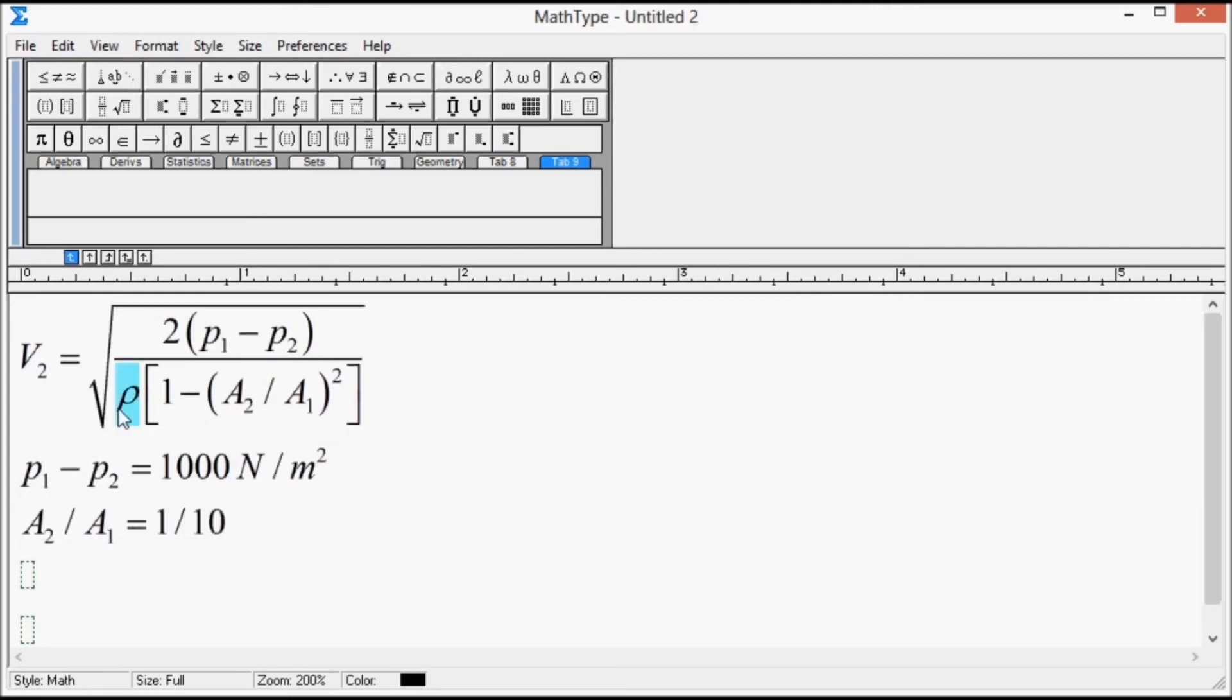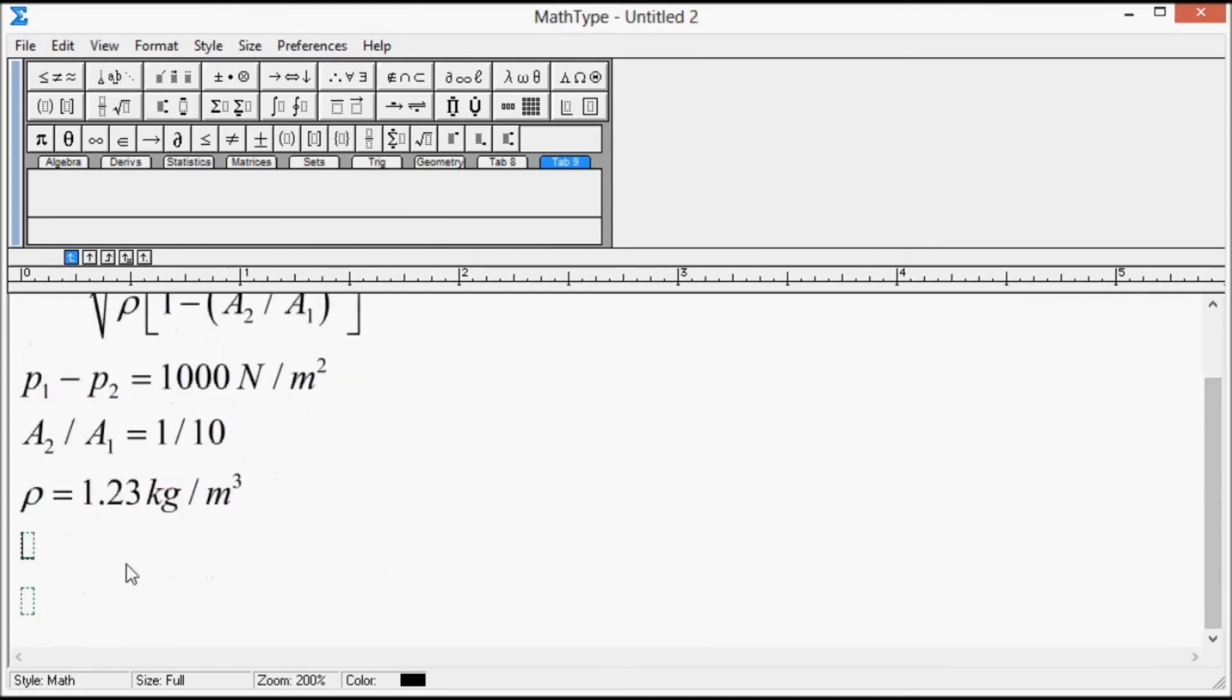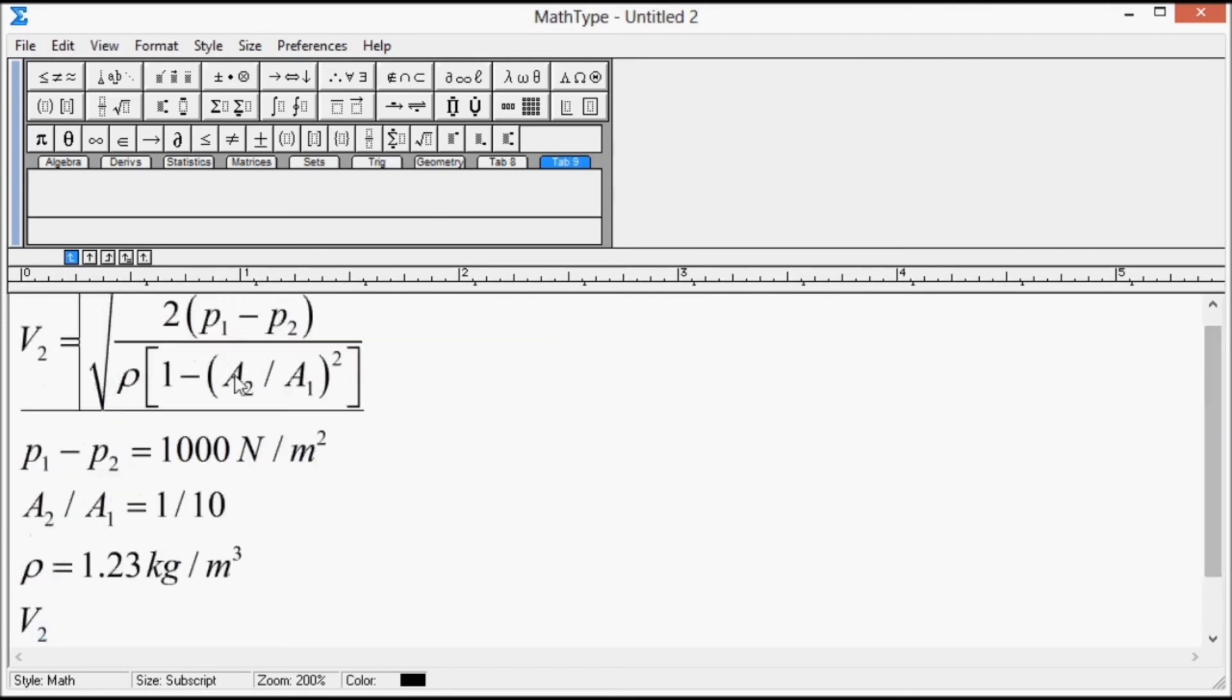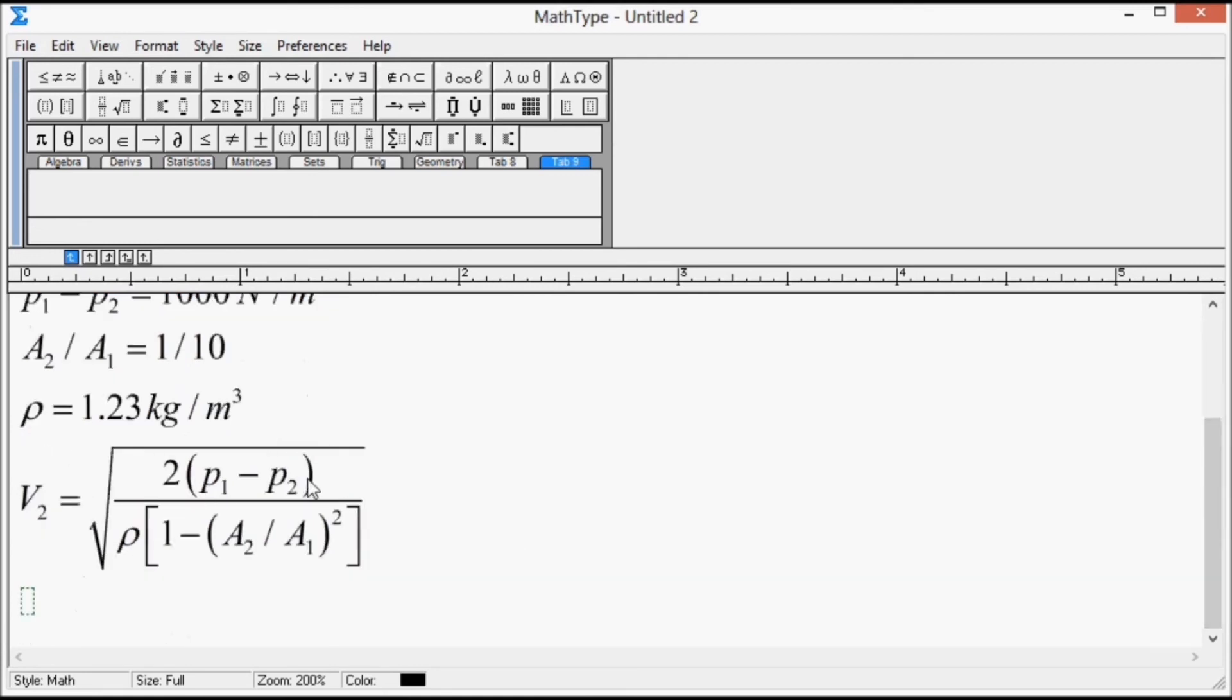And we know the density that is also given, that is 1.23 kg per meter cube. Substitute all these values in V2, that is the given formula, known formula. That is V2 is equal to root of 2 into we know P1 minus P2 is 1000.